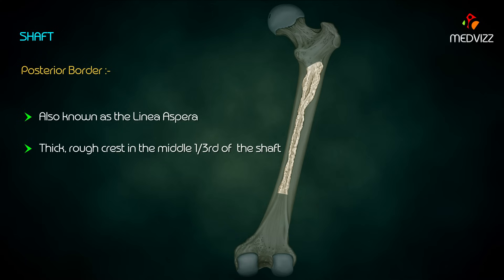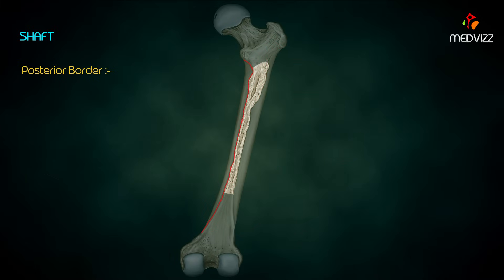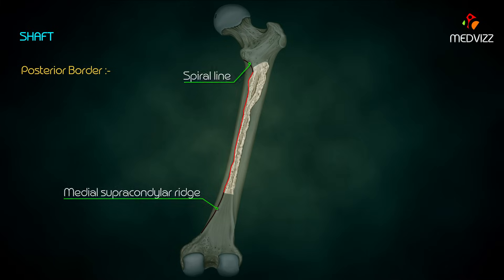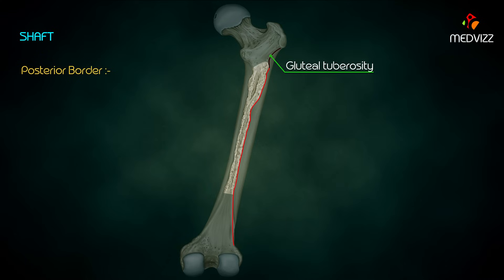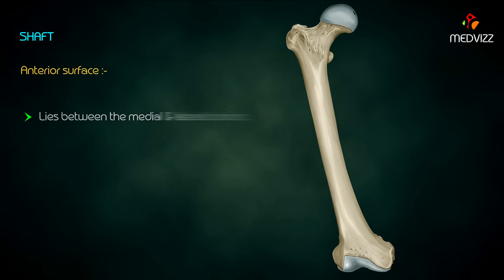The posterior border is also known as the linea aspera. It is a thick rough crest in the middle one-third of the shaft, having a medial and lateral lip which diverge in the upper and lower parts. The medial lip is continuous above with the spiral line and below with the medial supracondylar ridge. The lateral lip is continuous above with the gluteal tuberosity and below with the lateral supracondylar ridge. Lateral and medial intermuscular septae are attached to the linea aspera on its lateral and medial lips respectively.